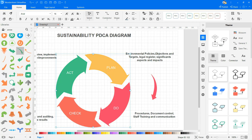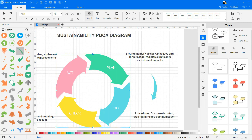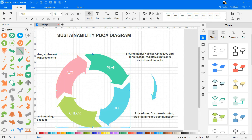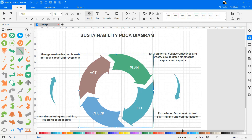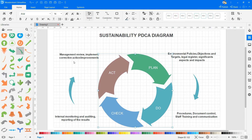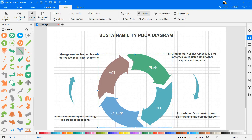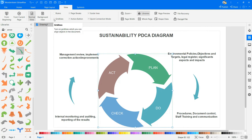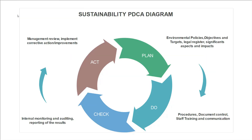You can make the diagram more visually appealing by changing the theme as shown. For a better view, deselect rulers and gridlines, and then select the From Current Page option to view the diagram in full screen.